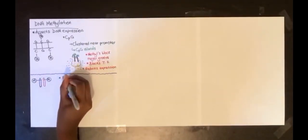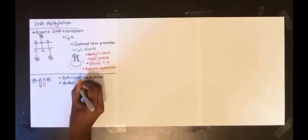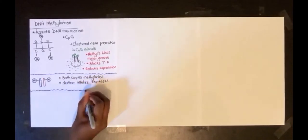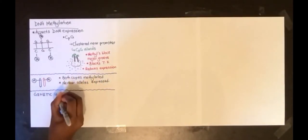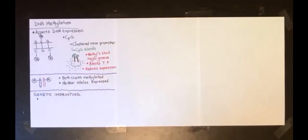Genetic imprinting is a special kind of methylation, though, because only one copy is methylated depending on which parent the copy was from.